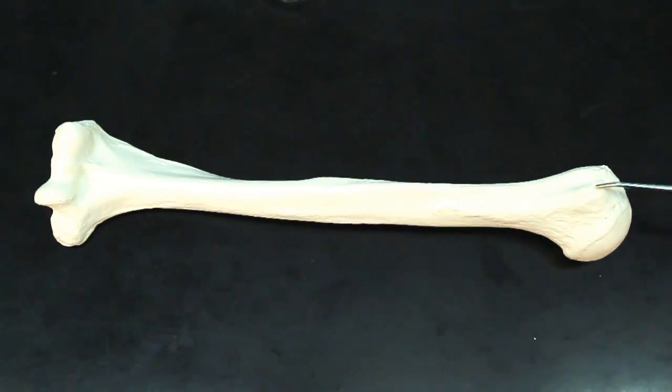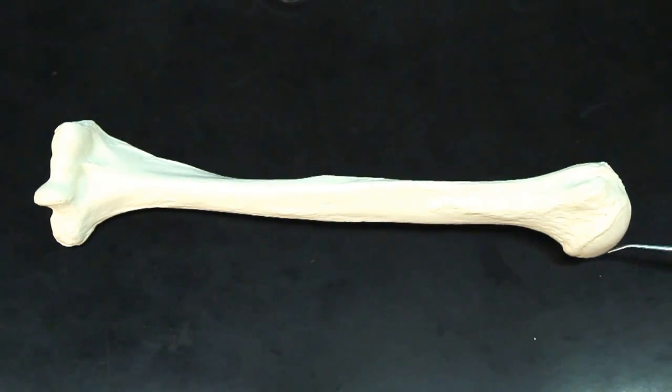This bone right here is going to be your humerus. This round, smooth portion up here is going to be the head of the humerus.